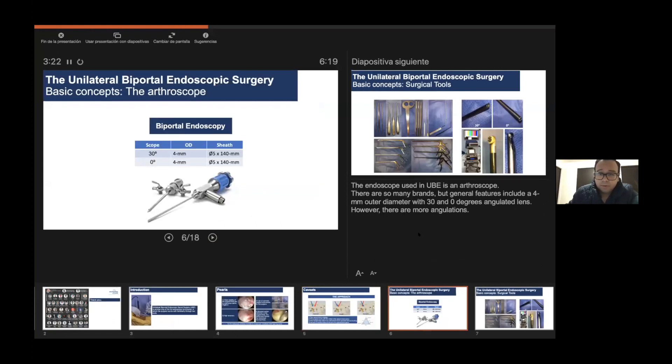The endoscope used in UBE is an arthroscope, different from the endoscope with working channel integrated in the uniportal techniques. There are many brands, but general features include a four millimeter outer diameter with 30 and zero degrees angular length, however there are more angulations.